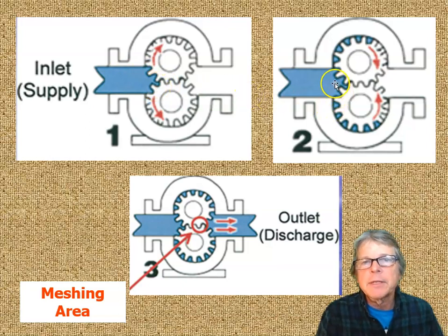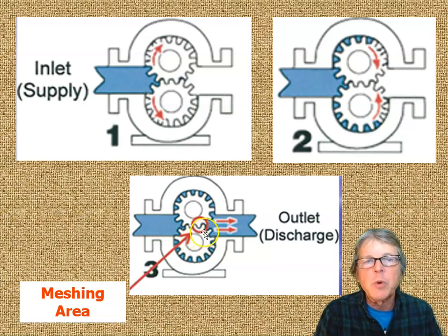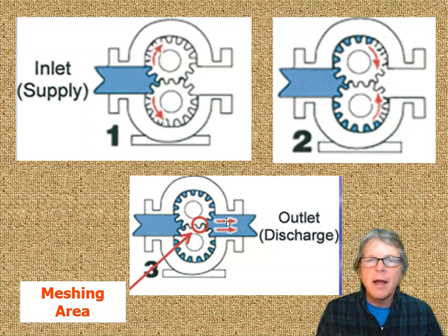In number two, we can see fluid going around the teeth, around the outside. Then as it gets to the discharge area, number three shows the meshing area where the teeth mesh together. Where the teeth mesh together, it squeezes the oil out. There is only one way this oil can go, and it's out the outlet. It can't go back because there's more oil coming towards it. It's like trying to walk backwards at the end of a baseball game when the whole crowd is going out to the parking lot. This meshing area squeezes the oil out, doesn't let it go through the center, and forces it out to discharge.